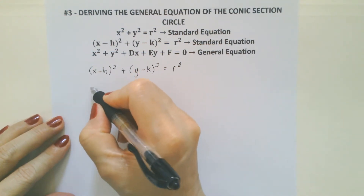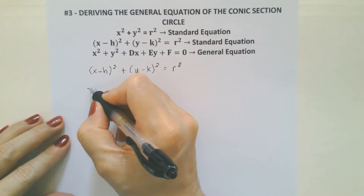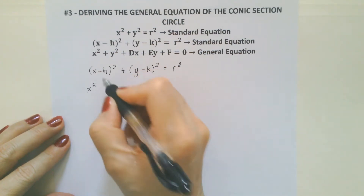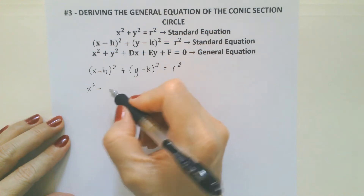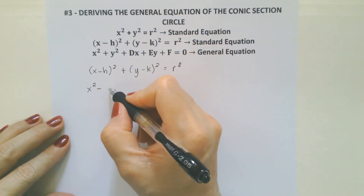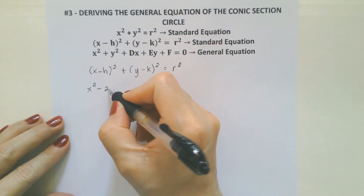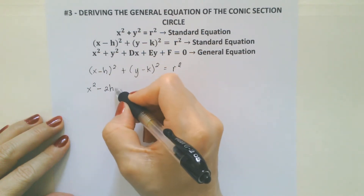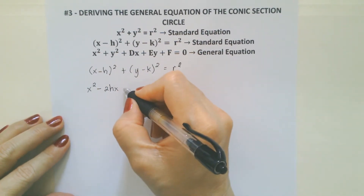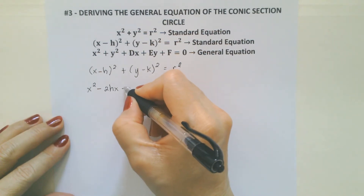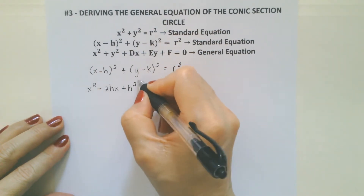How do you square the binomial? The first term is x squared. Copy the sign. Multiply the first term and the second term, x minus h, then multiply it by 2, and it becomes 2hx. Then, the last term being negative becomes positive, so it becomes h squared.